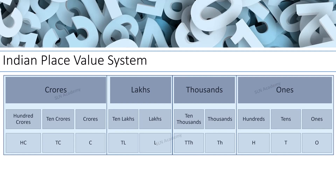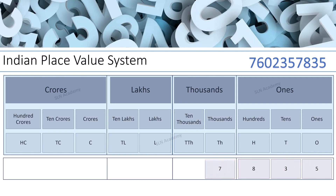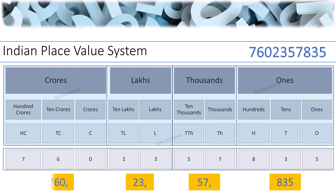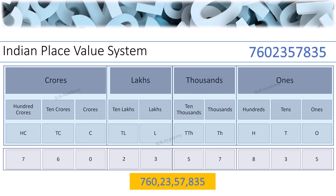Let us take a ten-digit number: 760,23,57,835. Let us start with the ones period and separate the periods using commas. Now, club all these digits into a number. This number is now written in the Indian place value system.